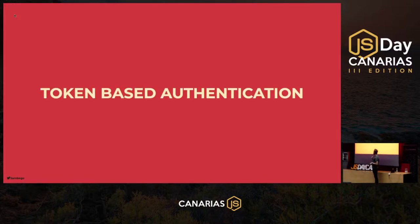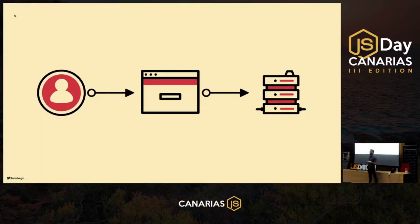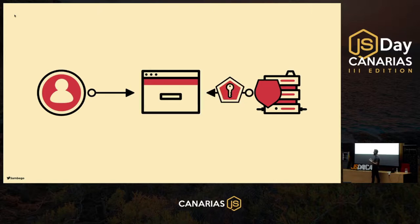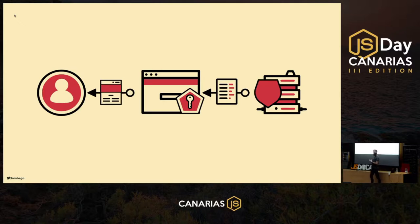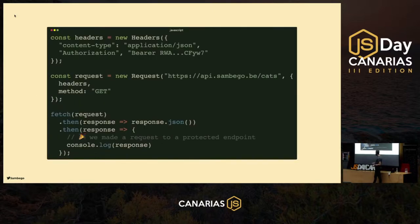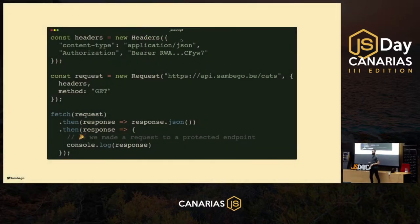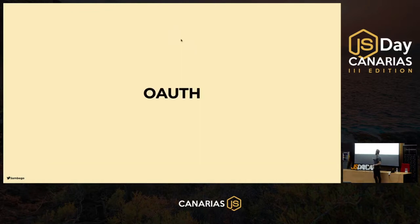For token-based authentication, the scenario is similar to before: user wants a protected resource, sends username and password, if they match we get data back — but instead of a cookie, we get an access token. We save this in memory and send it with every subsequent request to protected resources. The API validates it, and if valid we get our data back — similar to the session ID cookie, but using an access token instead. You send it as a bearer token in the request header.